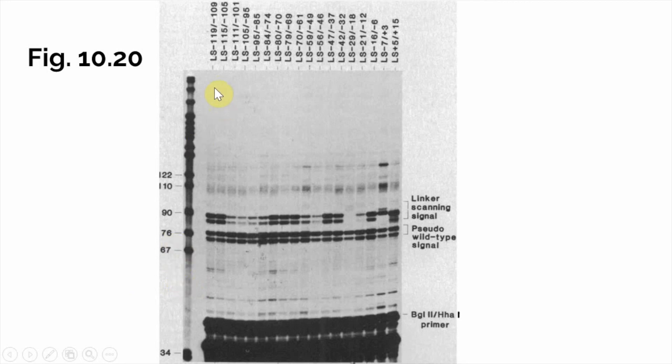Across the top we have lanes. Each lane represents a unique linker scan DNA. The one furthest to the left has the linker inserted between the minus 119 and minus 109 sites, the one right next to it between the minus 115 and minus 105 sites, and so on. You'll notice there is overlap between these, which becomes important later when we delineate the boundaries of each promoter element in the TK promoter.